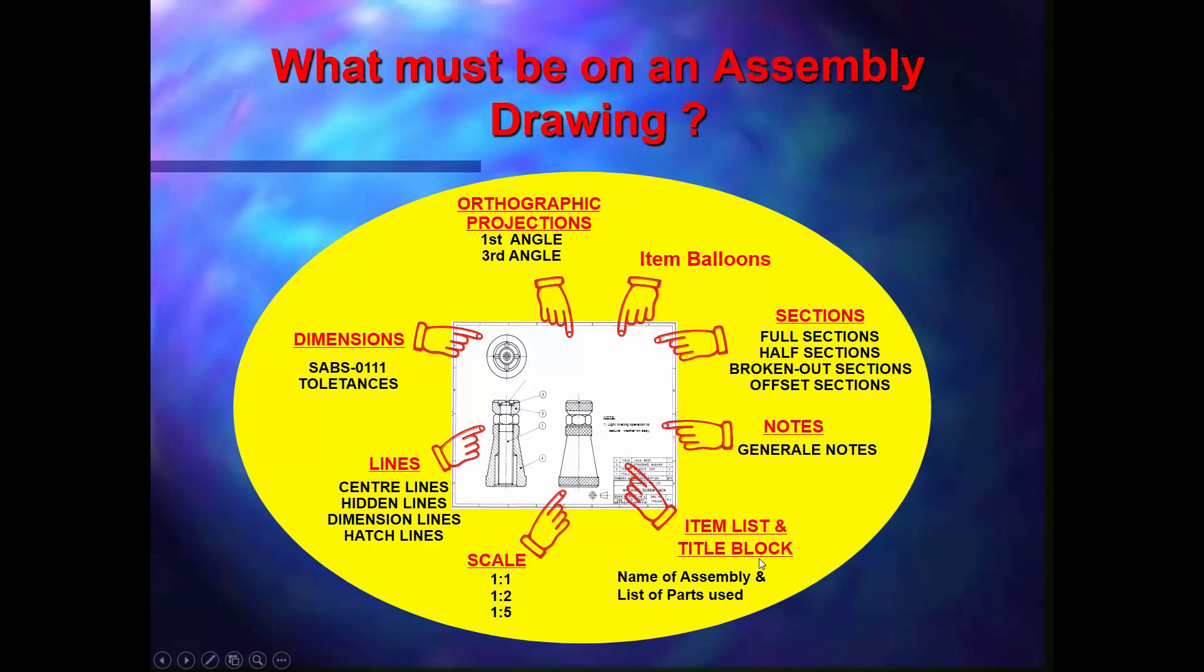Items list and title block—obviously the important things to show what is your drawing number, what is the correct title of the object, and your parts list, obviously starting with item one going up to all your components with the correct quantity and the correct description.